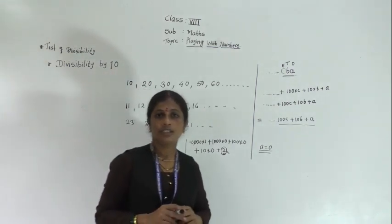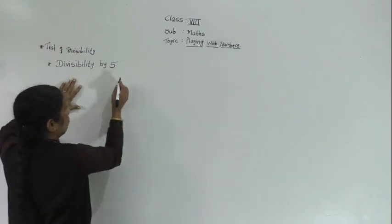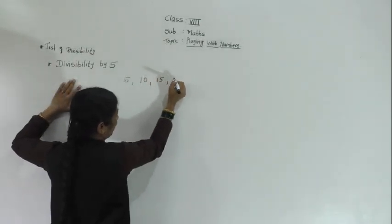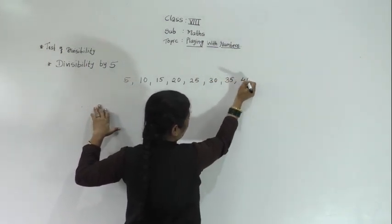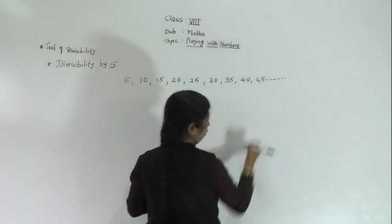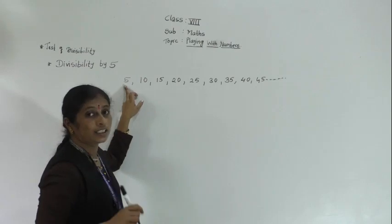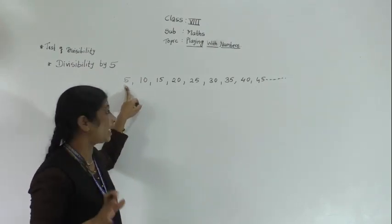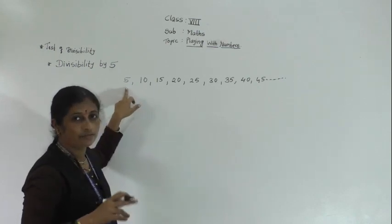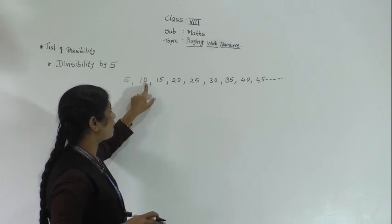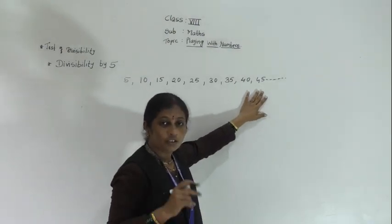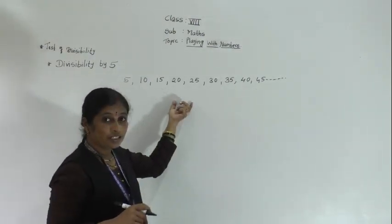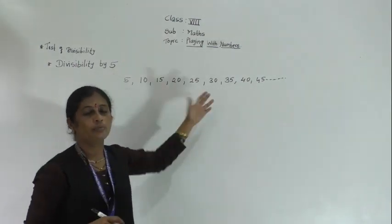Now, the test of divisibility by 5. Let's look at some numbers: 5, 10, 15, 20, 25, 30, 35, 40, 45, and so on — all multiples of 5. If you observe their unit places: 5, then 0, then 5, 0, 5, 0, 5 — alternating 0 and 5. So all these numbers are divisible by 5 and follow the test of divisibility by 5.